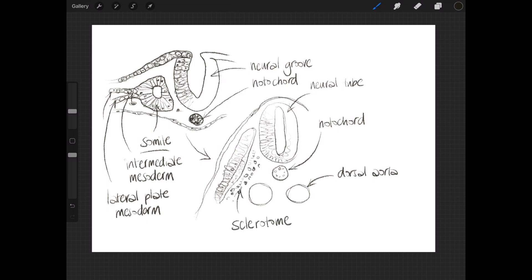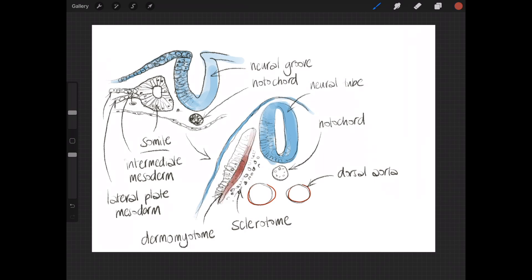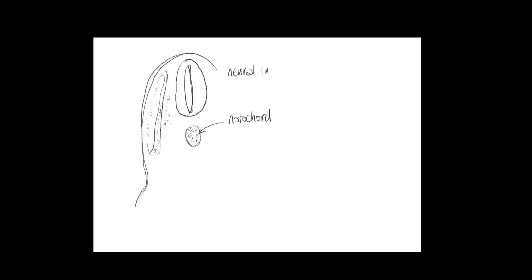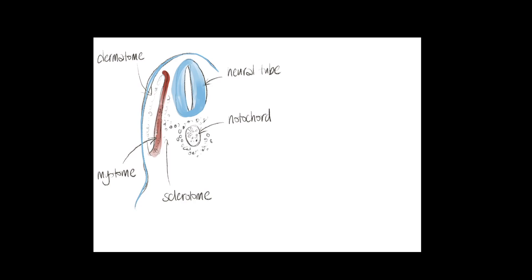What we can see happening to that somite is that it's dividing up. The somite organizes itself into an outer dermomyotome and an inner sclerotome. I always use blue for ectoderm, and I'm showing that inner bit of the dermomyotome in a muscly red color. The dermomyotome has split into an outer dermotome and an inner myotome, and the cells of the sclerotome are starting to migrate around the notochord and the neural tube — the beginning of the embryo forming its vertebral column.